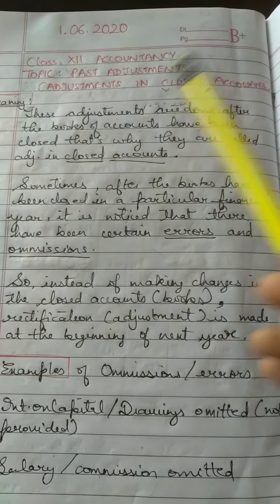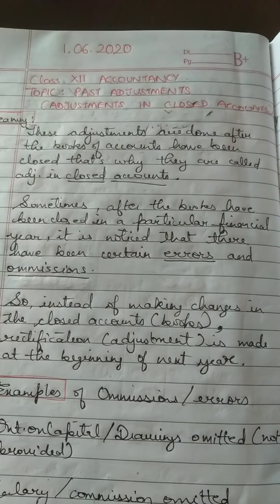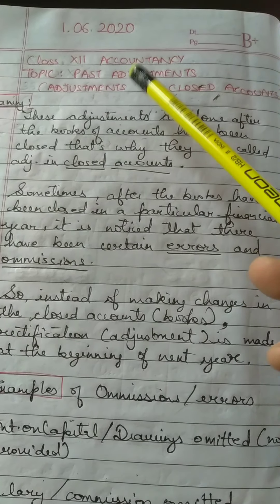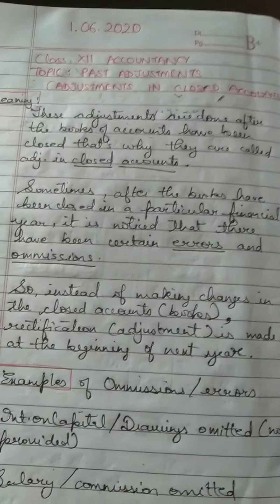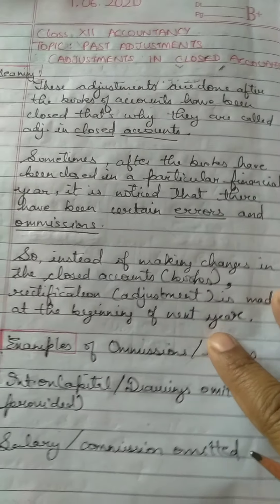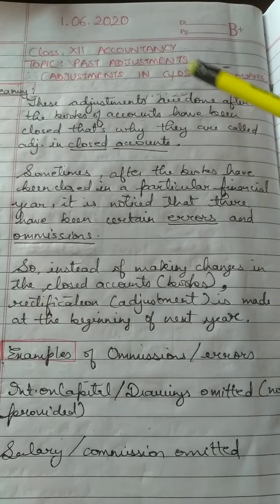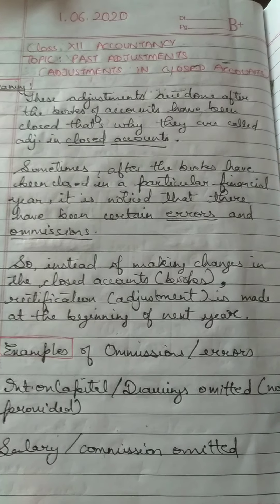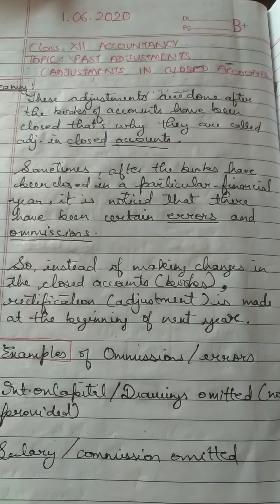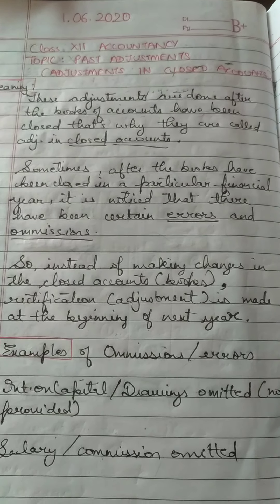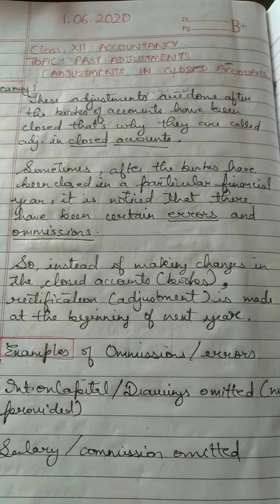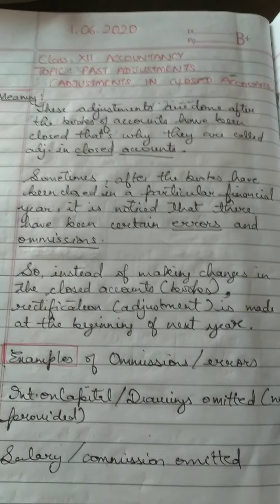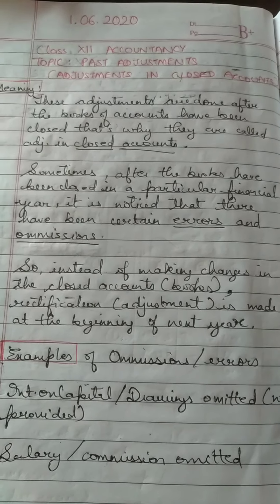Hello students. As you all know, we are doing questions on past adjustments. In the previous video, I explained what we mean by making adjustments in closed accounts. Whenever the firm forgets to give something to the partners, or it is given in the wrong ratio, instead of rectifying those old books or reopening them, that adjustment is made at the beginning of the next year's books.